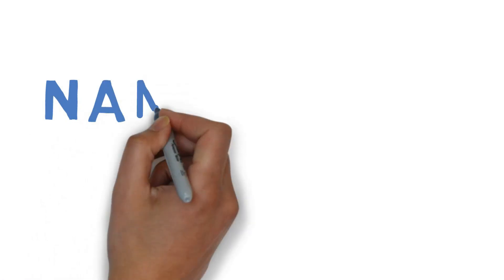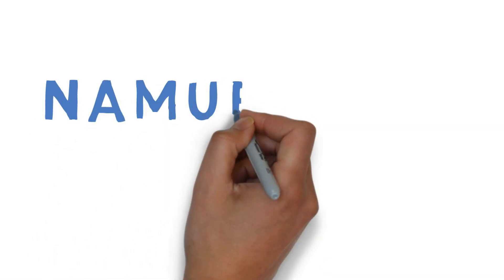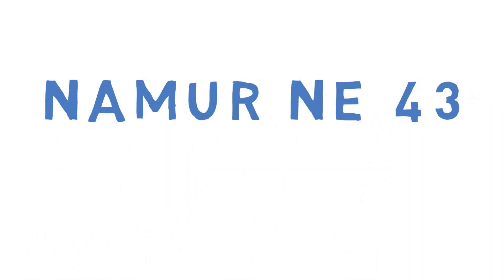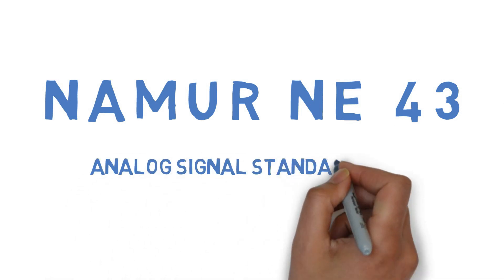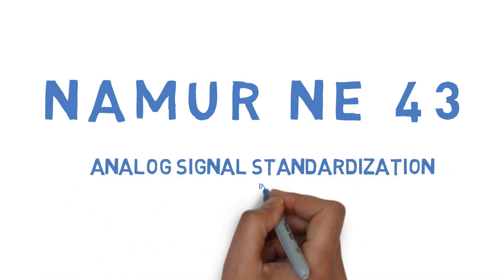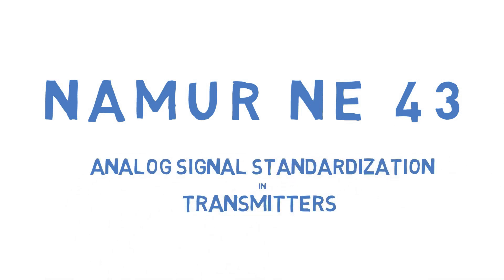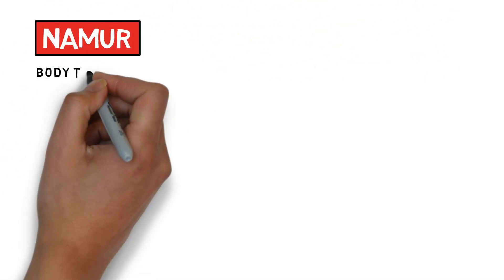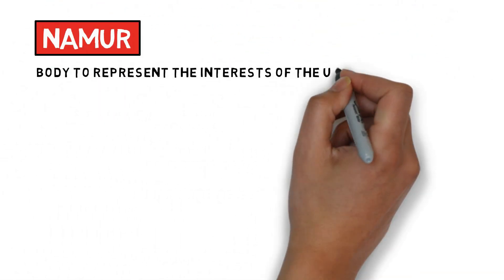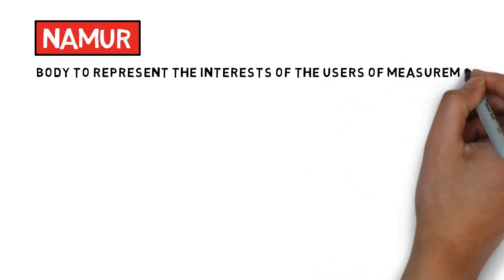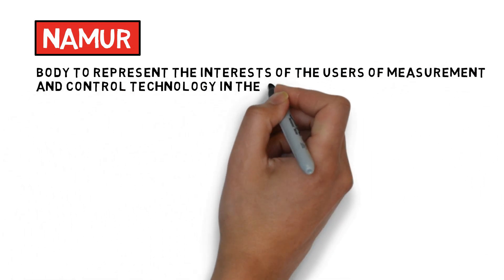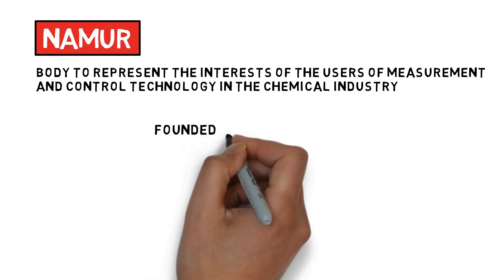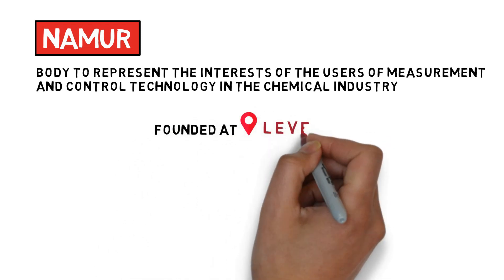In this video, we are going to see about NAMUR NE43 Analog Signal Standardization in Transmitters. NAMUR is a body to represent the interests of the users of measurement and control technology in the chemical industry, founded at Leverkusen in year 1949.